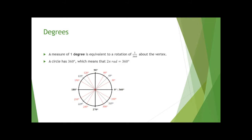People are fairly familiar with degrees. A degree is one rotation of 1/360 about the vertex, because a circle is defined to have 360 degrees. 2π radians equals 360 degrees — this gives us the conversion factor between radians and degrees. The unit circle with key degree points labeled makes it easier to identify angle positions in degrees.